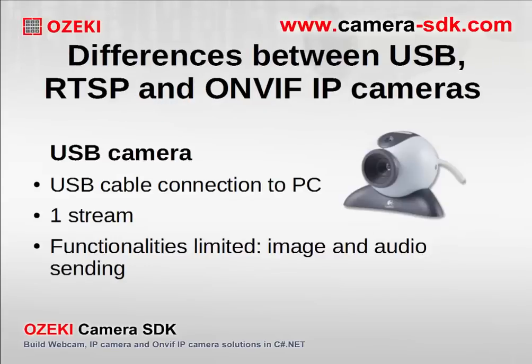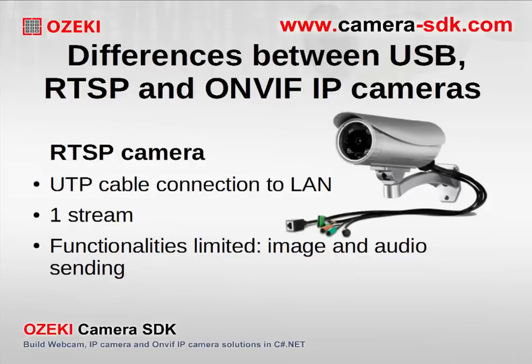A question that can be confusing is: what is the difference between a USB web camera, an RTSP camera, and an ONVIF IP camera? We differentiate them in three aspects: connection type (USB vs. UTP), number of streams, and number of functionalities. A USB web camera connects via a USB cable and has only one stream. Its functions are limited, but it can display the image and, if supported, send audio. An RTSP camera connects to the network with a UTP cable and also has just one stream, with similar functions to the USB web camera.